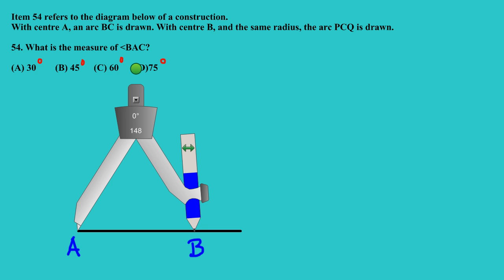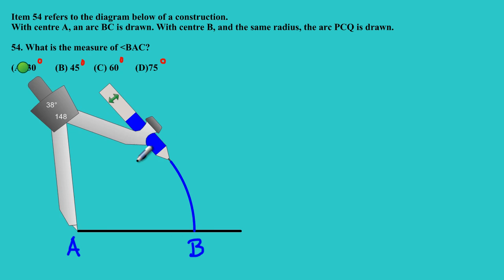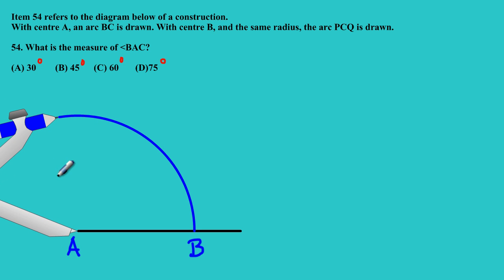Here's my compass. Simply what I'll be doing: I'm going to take my compass, place it at point A, which is my center, and here it is—with center A, as it's there in the instruction, an arc BC is drawn.